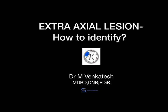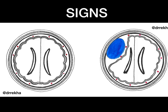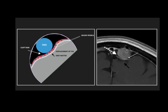Welcome back to Shades of Radiology. Today I'm going to discuss extra-axial lesions and how to identify them. There are various signs of extra-axial lesions. Here you can see normal brain parenchyma with the pial vessels and dura mater. With an extra-axial lesion, the tumor is present outside the brain parenchyma, and you can see the CSF forming a meniscus-like appearance with the blood vessels or pial vessels displaced.